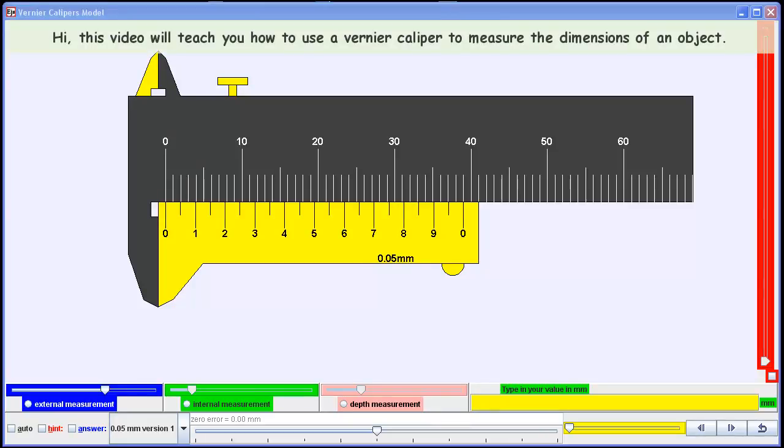In this video, we will explain how to use a vernier caliper to measure dimensions. The vernier caliper in this case has a precision of up to 0.05 mm.